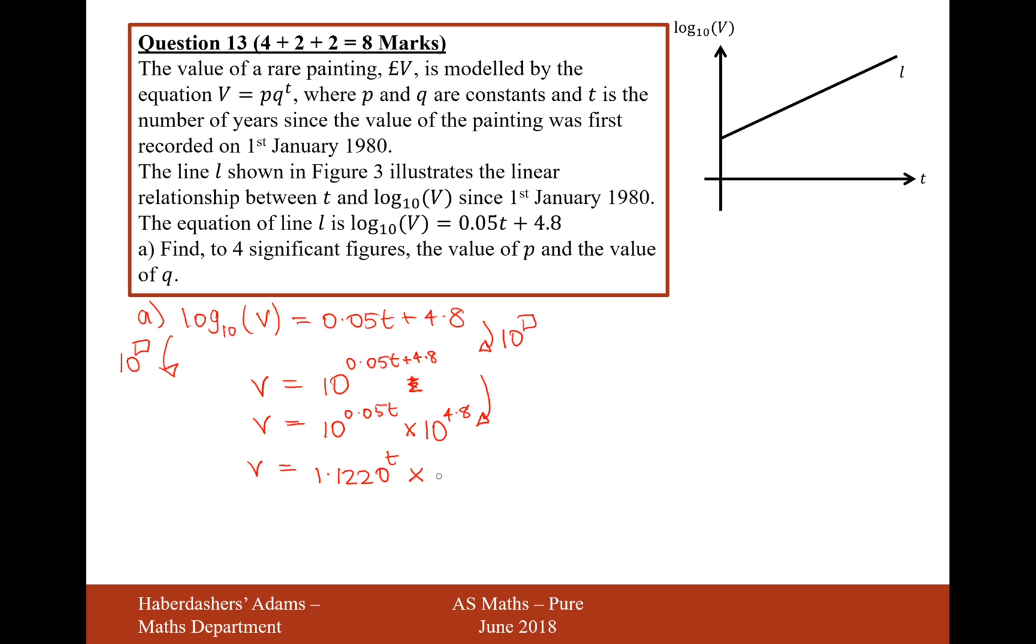Let's write 63,100 to 4 significant figures. That's the 9 rounds the 5, 63,100. That's where it's rounded to four significant figures. We generally write this the other way around, 63,100 times 1.1220 to the power of T.